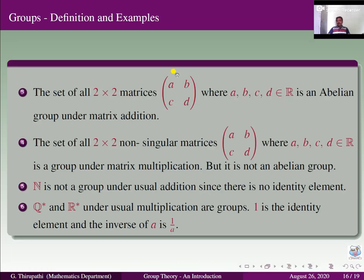Consider 2 by 2 matrices with respect to matrix addition. It is an abelian group. It satisfies closure — you take any 2 matrices and add them, you get the same type of matrix with elements belonging to the real numbers. Matrix addition is associative. The identity element for addition is the zero matrix (0, 0; 0, 0). The inverse of matrix (A, B; C, D) with respect to addition is (-A, -B; -C, -D). Since matrix addition is commutative, the set of all 2 by 2 matrices is an abelian group under addition.